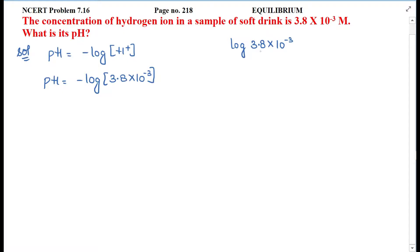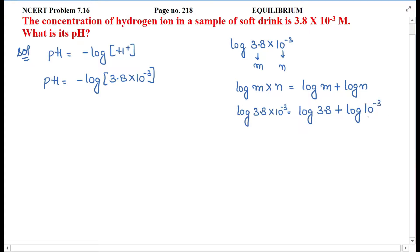We will use two formulas. First will be log m × n equals log m plus log n. Let's assume this, where this one is n.